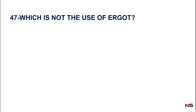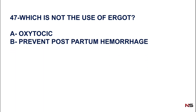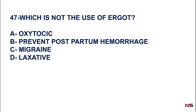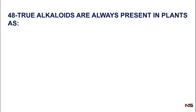Question 47: Which is not the use of ergot? Options: oxytocic, prevent postpartum hemorrhage, migraine, laxative. Ergot contains ergometrine and ergotamine. Ergotamine is used against migraine; ergometrine is used as an oxytocic and to prevent postpartum hemorrhage. So the correct answer is option D — laxative. Ergot has no laxative effect.